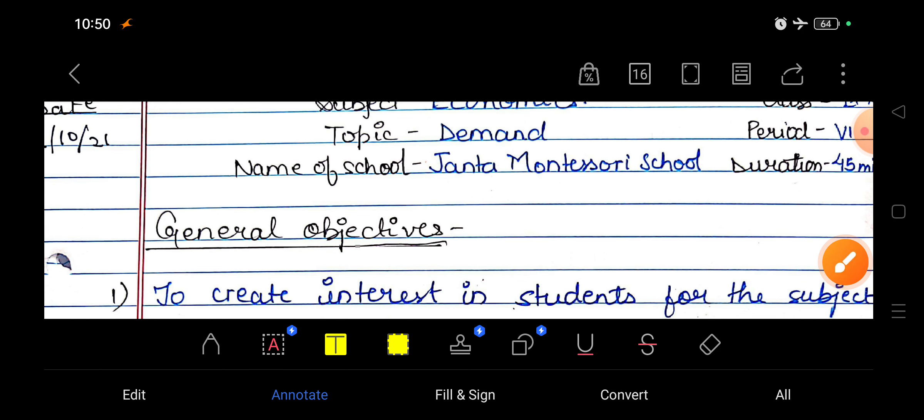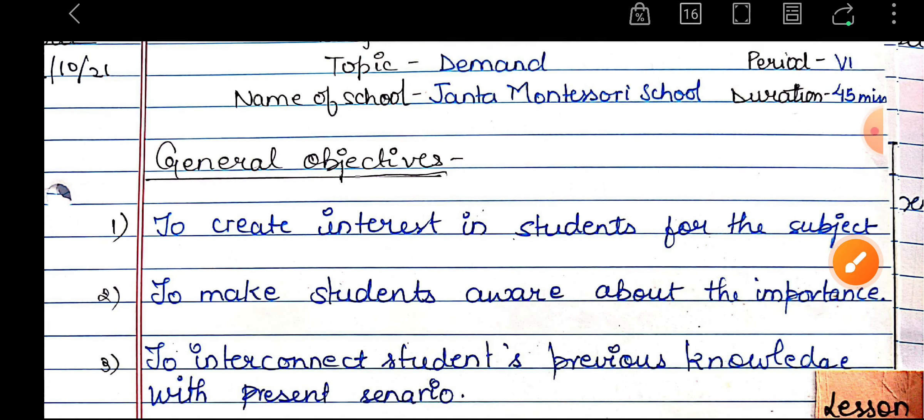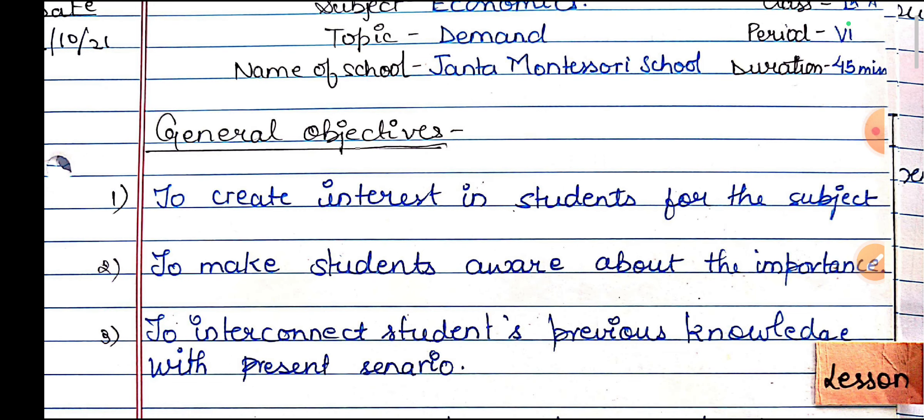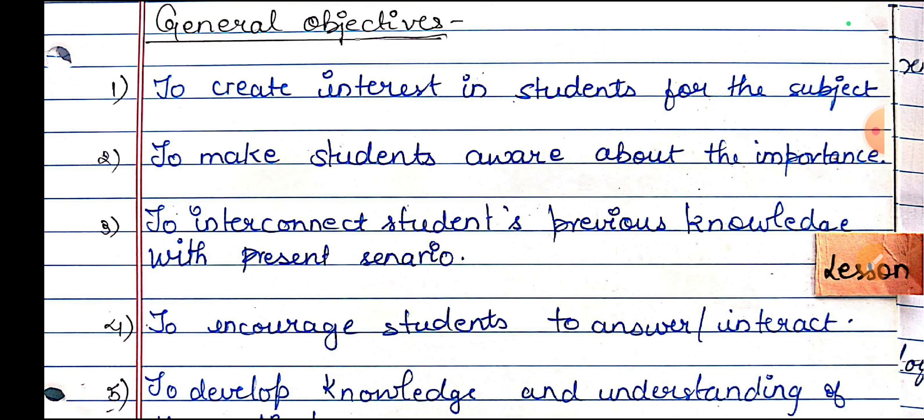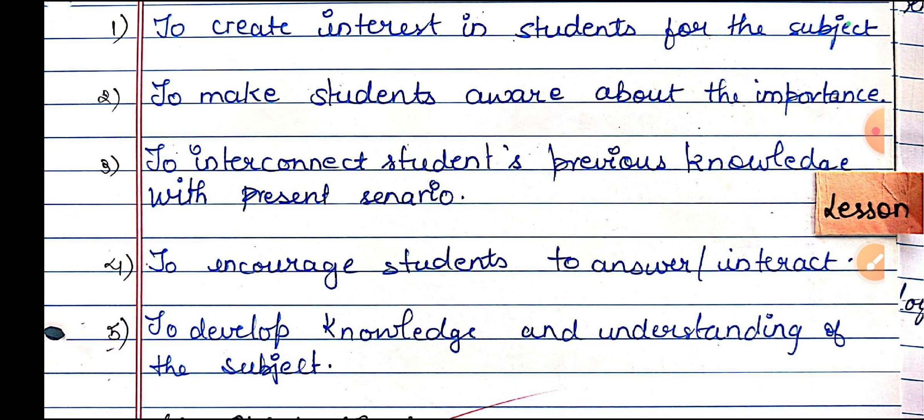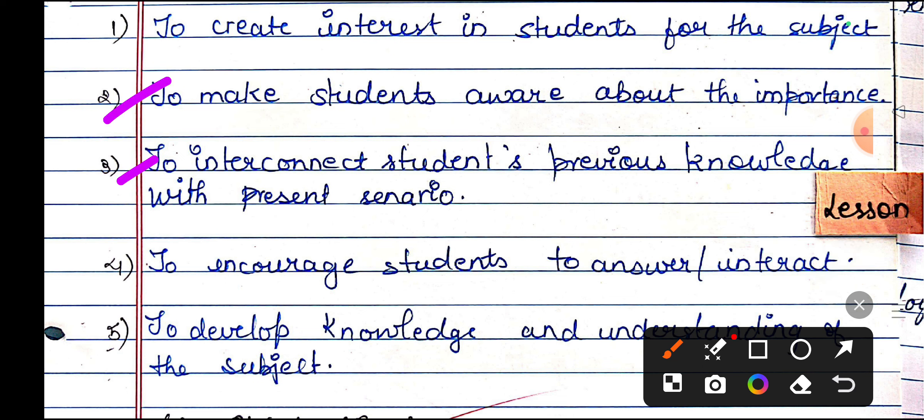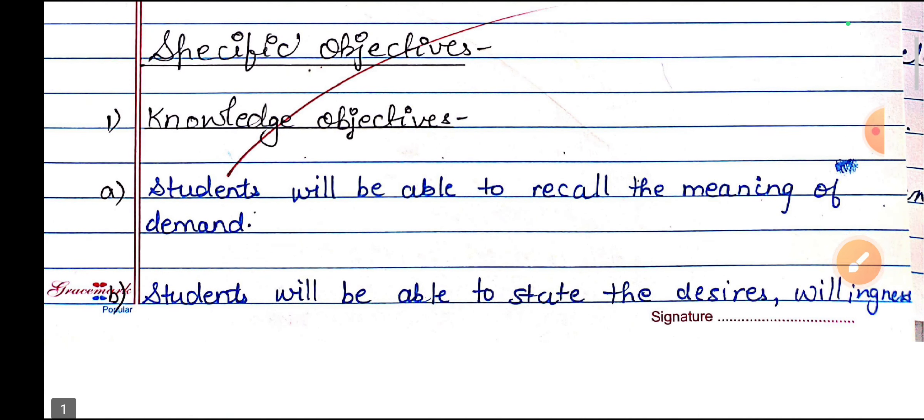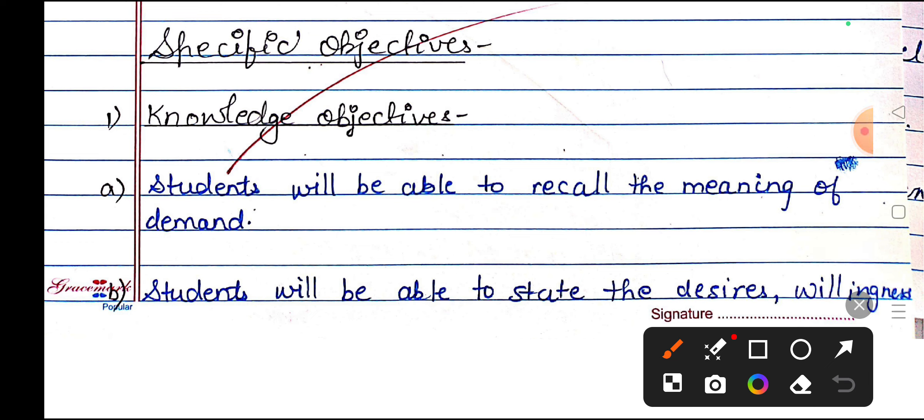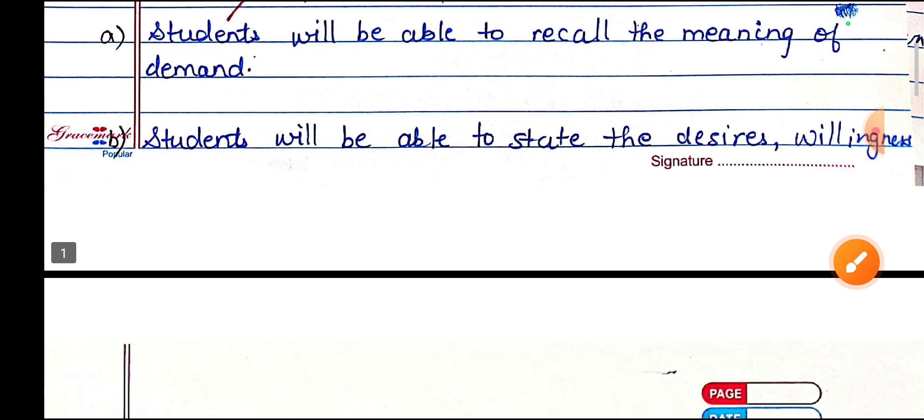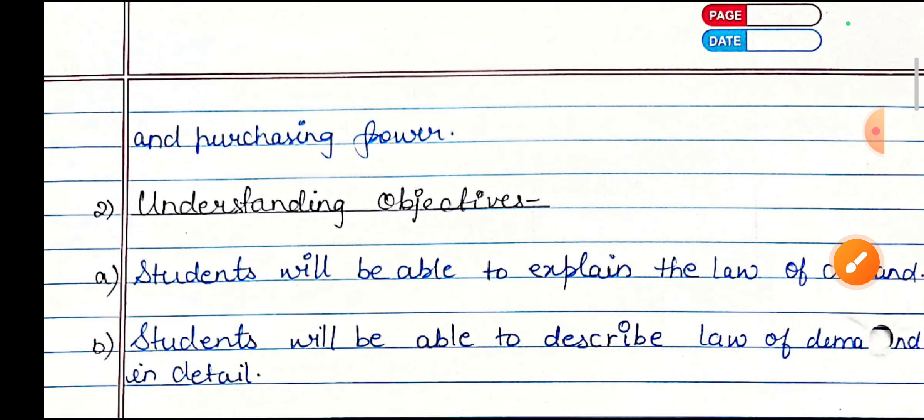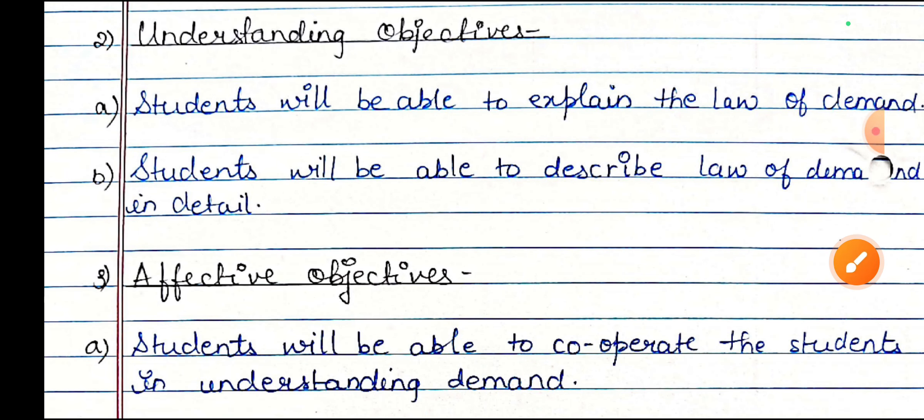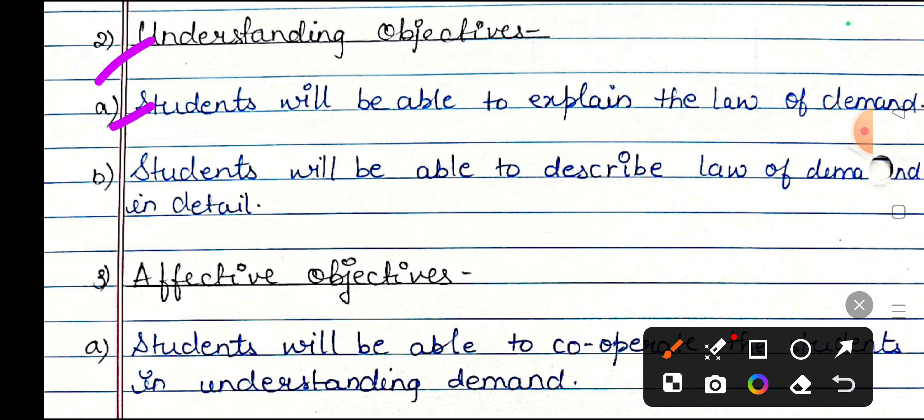Then you will see here. General objectives will mention these points. After that, you will see the specific objectives, in which you will find the knowledge objectives. This will be the sub points. After that, knowledge objectives and the understanding objectives, the sub points.